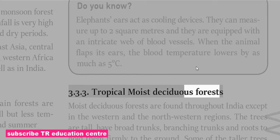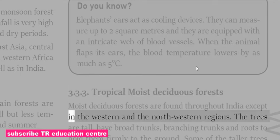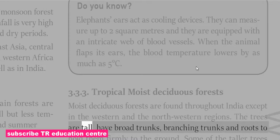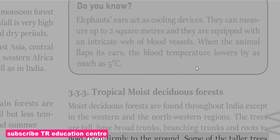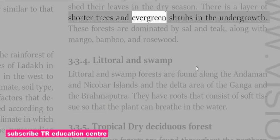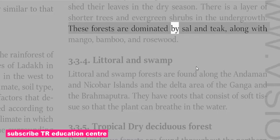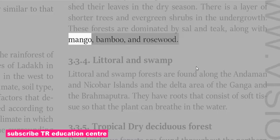Tropical Moist Deciduous Forests are found throughout India except in the western and north-western regions. The trees are tall, have broad trunks, branching trunks and roots to hold them firmly to the ground. Some of the taller trees shed their leaves in the dry season. There is a layer of shorter trees and evergreen shrubs in the undergrowth. These forests are dominated by sal and teak, along with mango, bamboo and rosewood.